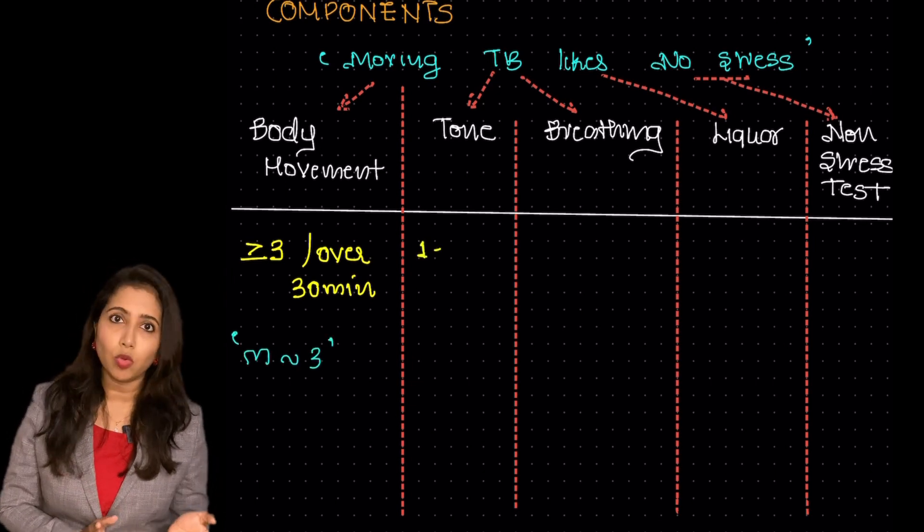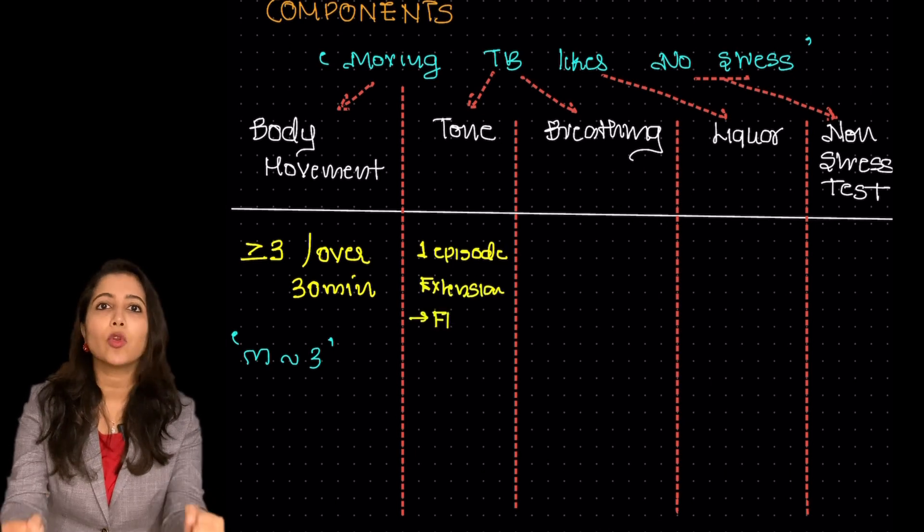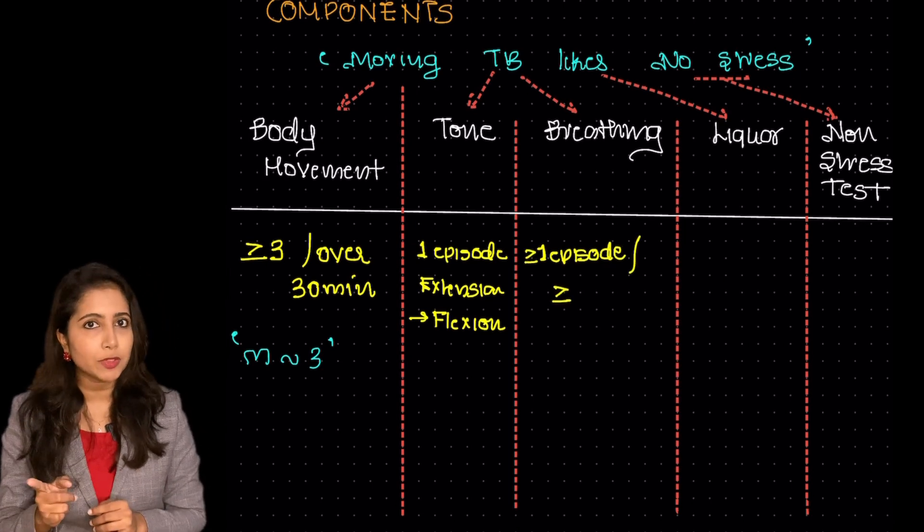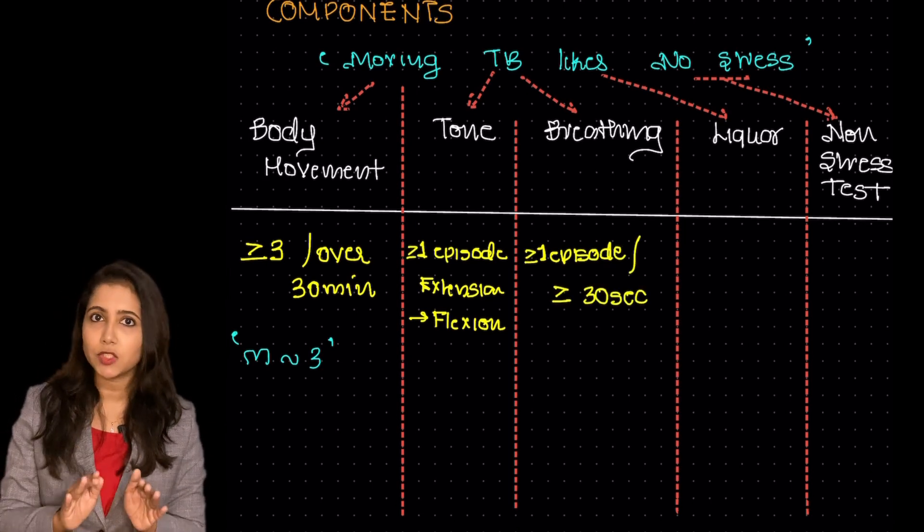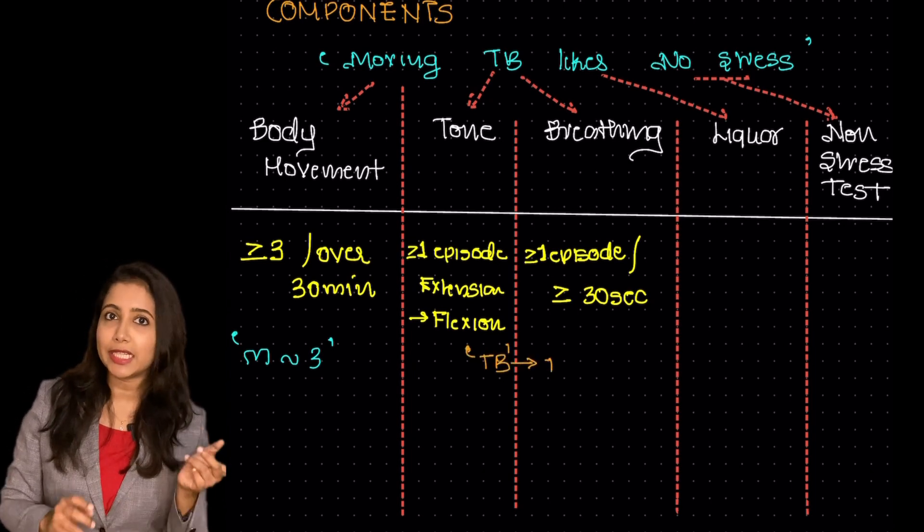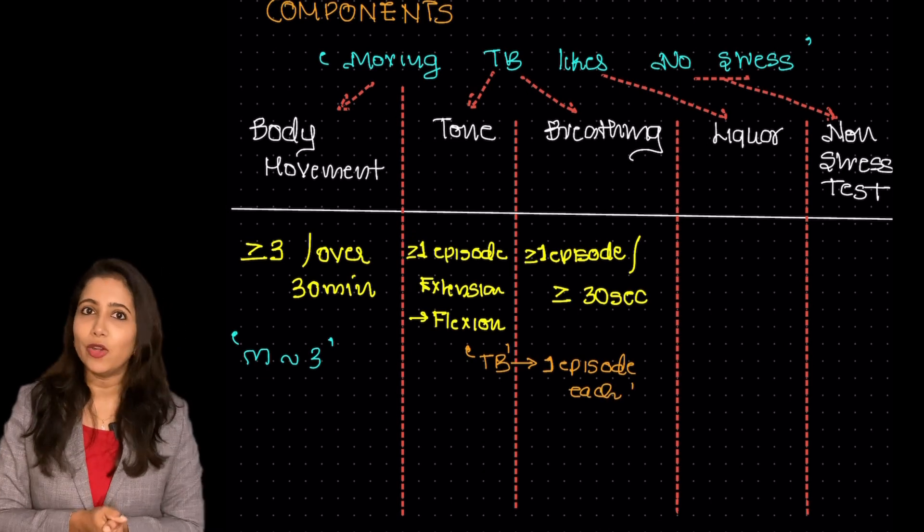Regarding the tone, there should be at least 1 episode of extension followed by flexion. Regarding breathing, there should be at least 1 episode of breathing which lasts for at least 30 seconds. So the TB each is for 1 episode each.